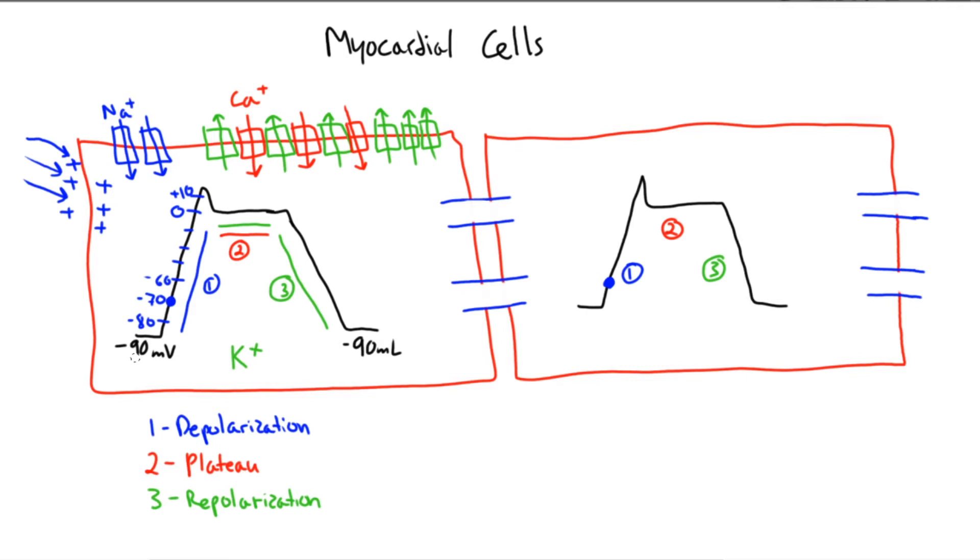When the cell is stimulated, cations, in this case sodium, enter the cell and make it less negative. Remember that the resting membrane potential is negative 90 millivolts and you have positively charged sodium entering the cell. This stimulates the cell until it reaches negative 70 millivolts, which is the threshold potential.